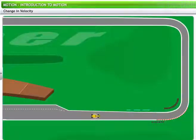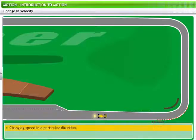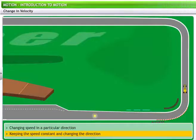Velocity of an object can change by either changing its speed in a particular direction or by keeping the speed constant and changing the direction. When the yellow car takes a turn and moves ahead, its velocity becomes variable.